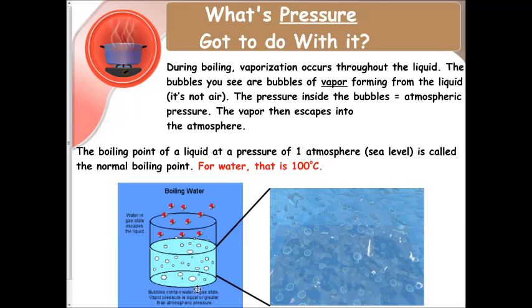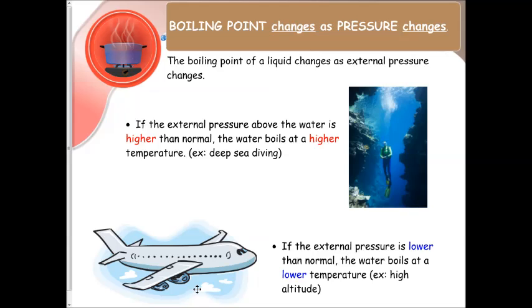Now the boiling point of a liquid at a pressure of one atmosphere, or sea level, is called its normal boiling point. The one you're used to the most is water, and that is 100 degrees Celsius. Now the boiling point of a liquid is going to change as external pressure changes.